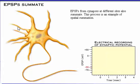Excitatory postsynaptic potentials from synapses at different sites also summate. This process is an example of spatial summation.